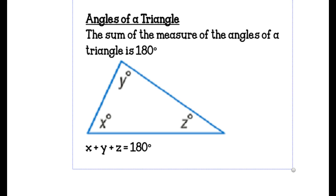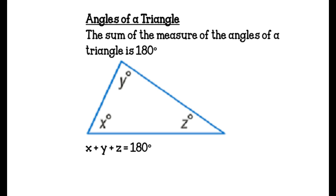Angles of a triangle: the sum of the measures of the angles of a triangle is 180 degrees. We know that the angles inside a triangle all add up to 180 every single time, no matter what. So whenever we have a missing angle, we can figure it out by making an equation to solve for that missing angle, knowing they all add up to 180.